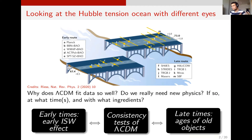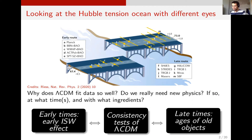At the same time, if we forget the Hubble tension, Lambda CDM seems to fit the data really well. So the question is: do we really need new physics, and if so at what times and with what ingredients? I think these questions motivate consistency tests of Lambda CDM both at early and late times, which is what I'll talk about today.